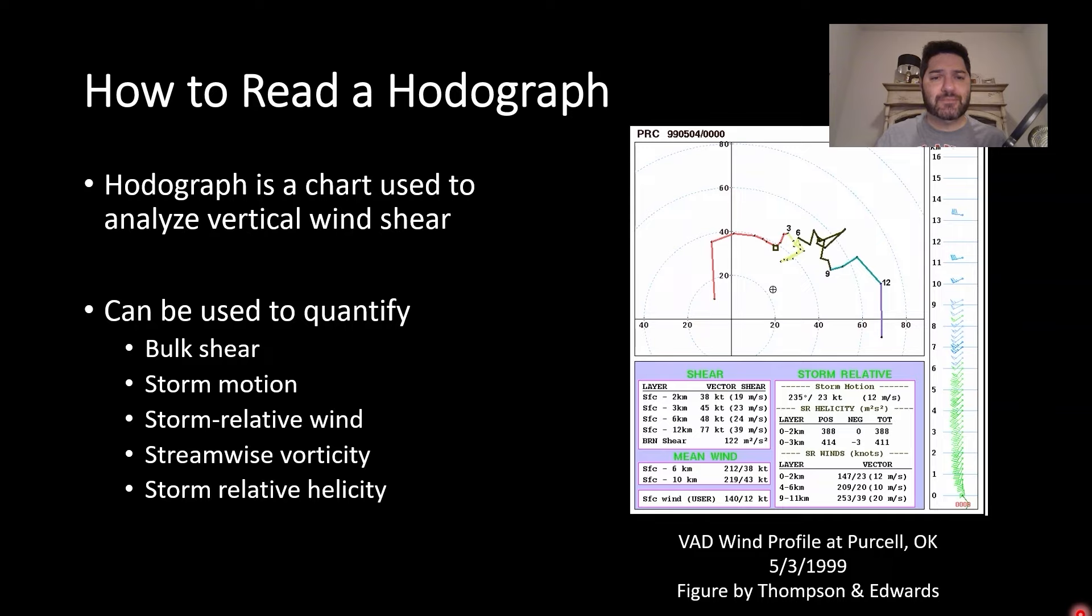Now getting into hodographs. A hodograph is a chart used to analyze vertical wind shear. It can be used to quantify bulk shear, storm motion, storm relative wind, streamwise vorticity, and storm relative velocity. That's a lot - we'll get into that in the second video quite a bit more, but suffice it to say this particular chart is extremely useful for understanding where tornadoes might form and maybe even how strong they might be.